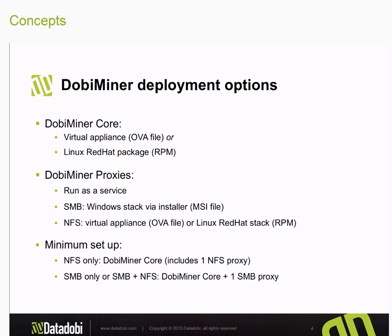As far as deployment options go, the Dolby Miner core can be deployed as a pre-built virtual appliance that's complete with a pre-configured operating system. We also have an option that can be deployed on Red Hat systems or CentOS systems as a simple Red Hat package. The NFS proxy can be deployed as an OVA file on a VMware environment on an ESX server, or can be deployed on an existing Red Hat server or CentOS server as a Red Hat package.